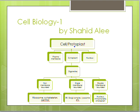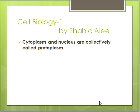The living matter is called protoplasm, which consists of three things: plasma membrane, cytoplasm, and nucleus. Organelles can be non-membrane bound (ribosome, cytoskeleton, centriole), single membrane bound, or double membrane bound. Double membrane bound organelles include chloroplast, mitochondria, and the nucleus. Cytoplasm and nucleus together are collectively called protoplasm.